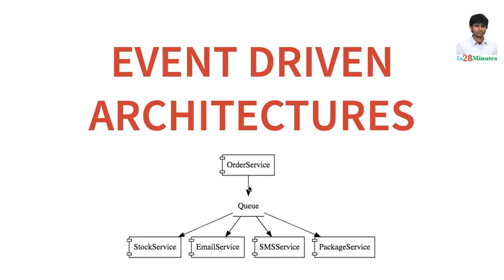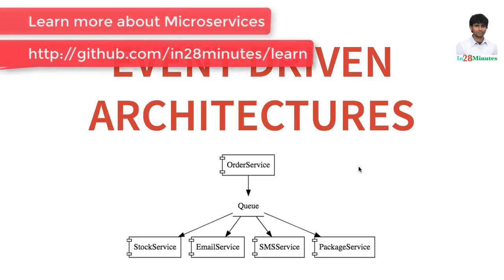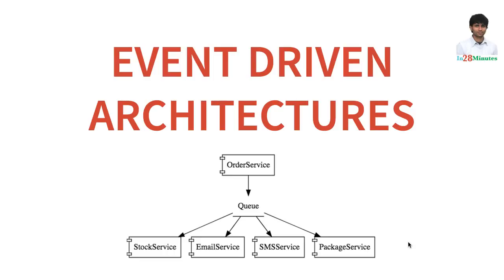A queue helps you separate the thing which is generating the event from the services which are processing the event. The services processing the event need not be available all the time. In case there is a huge amount of load, you can increase the number of services processing the events very easily. The other flexibility we get is that making changes is very easy — if I want to do something else, I just need to create a new service listening on to the queue for the specific event it is interested in, without touching any of the existing services. All these features make it imperative that whenever you have requirements of processing things from a huge number of users, you would want to go for architectures involving queues.